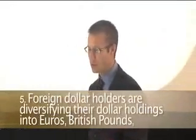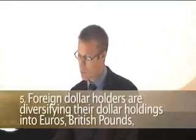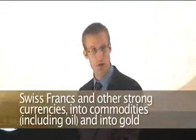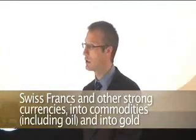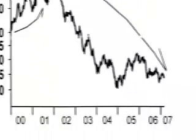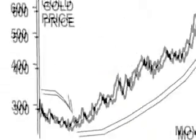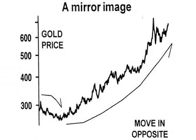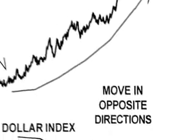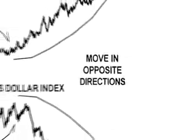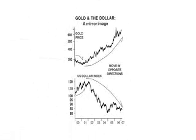Foreign dollar holders are diversifying their holdings into euros, British pounds, Swiss francs, and other strong currencies, as well as into commodities including gold and oil. We saw the Chinese do this in earnest within the last year or two, growing their strategic mineral and oil reserves. As we've seen the decline in the dollar from 2001 to the present, the inverse correlation has shown up in the price of gold — a mirror image, they tend to move in the direct opposite direction, whether it's inflation or simply dollar decline.